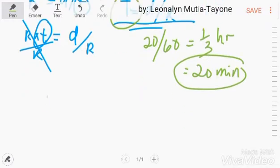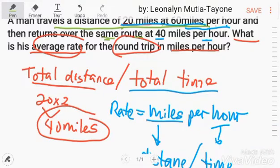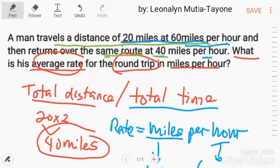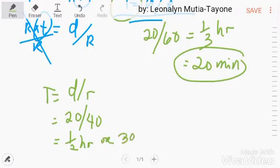Pangalawa. So, that is time equals distance over rate. Pangalawa. So, 20 ang distance pa rin. Kasi, same route naman. Tapos, ang rate niya is 40. So, 20 over 40. And this is one half hour or 30 minutes.